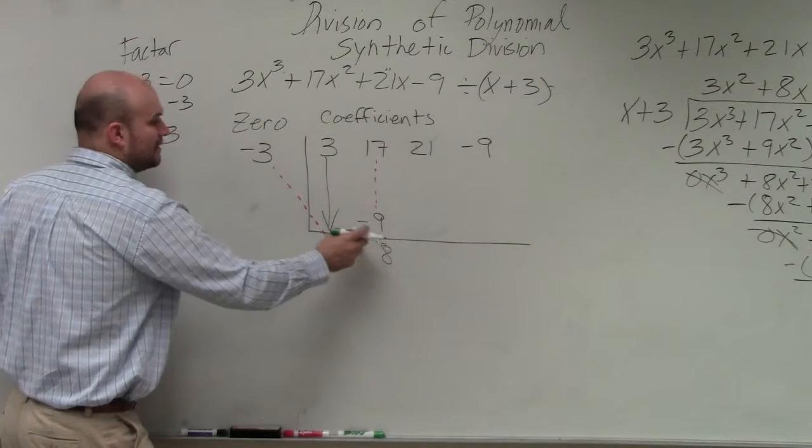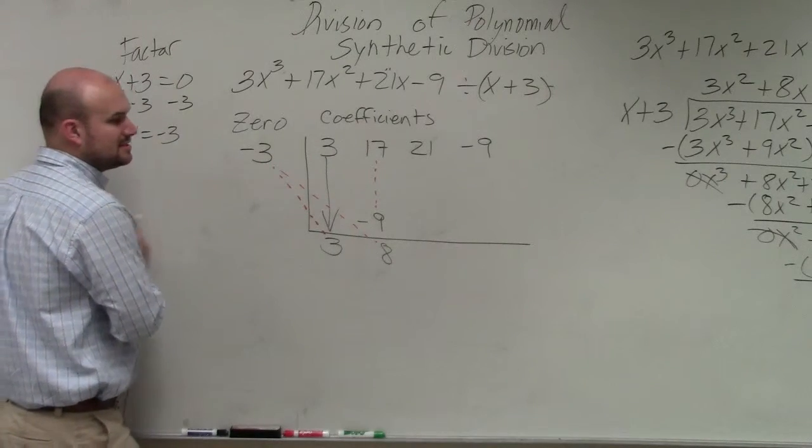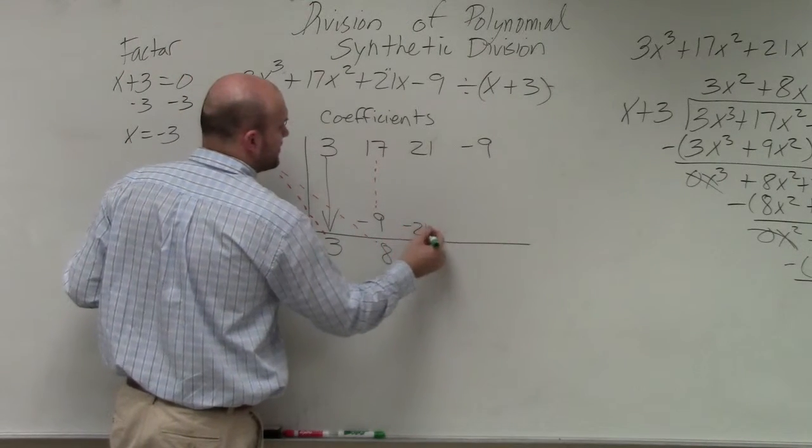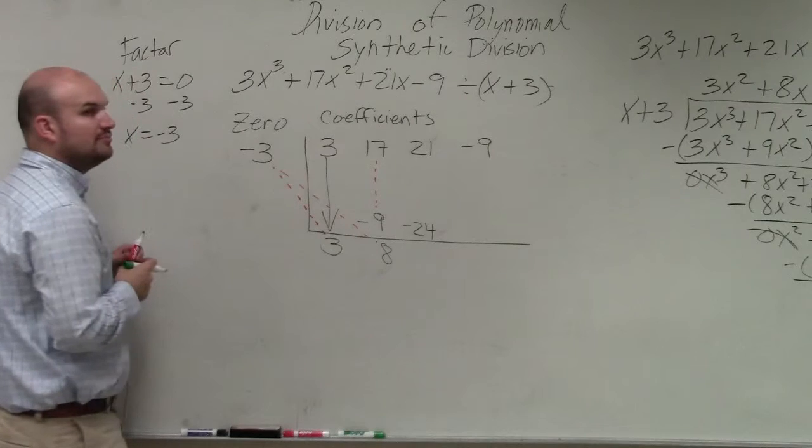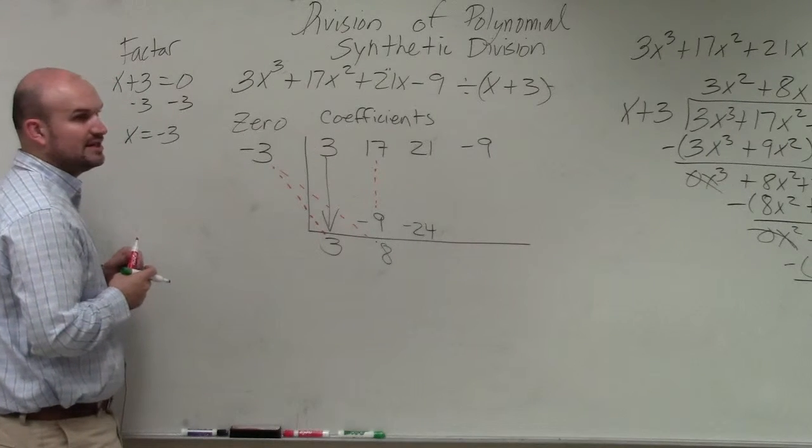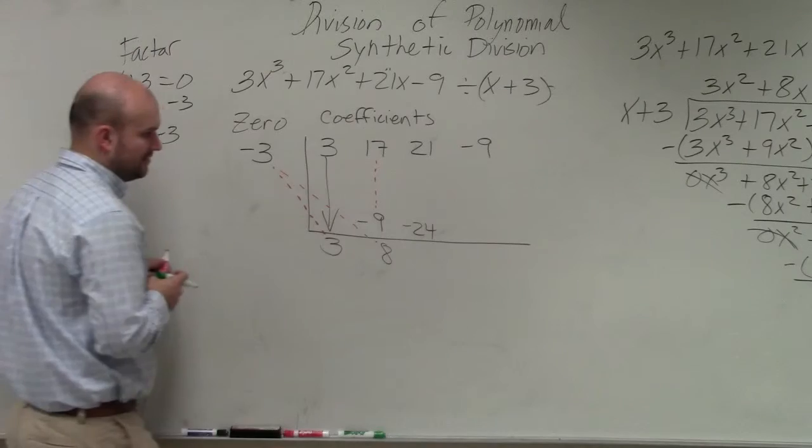Multiply on the diagonal. 8 times negative 3 is negative 24. 21 plus negative 24 is negative 3.